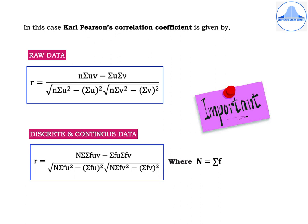When we use the change of origin and change of scale, expressing x and y in terms of u and v, the formula for Carl Pearson's correlation coefficient for raw data is: r equals n times summation uv minus summation u times summation v, divided by the square root of [n times summation u-squared minus (summation u) squared] times [n times summation v-squared minus (summation v) squared]. To get this formula, simply replace x and y by u and v in the original raw data formula.